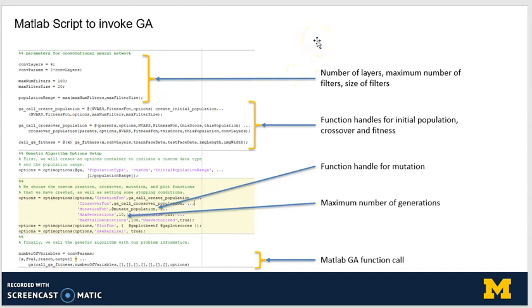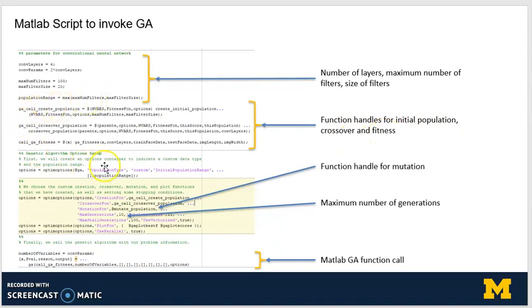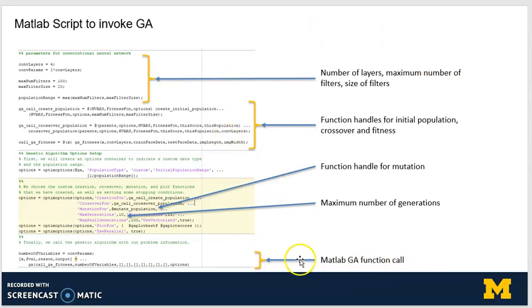Let's look into the MATLAB script used for invoking the GA. In the beginning, we set the different configuration parameters: convolutional layers as 4, maximum number of filters as 100, and maximum filter size as 20. Then we define the different function handles for creating the initial population, crossover, and fitness, as seen here. We also have a function handle for mutation. Then we have the maximum number of generations we allow the genetic algorithm to run — analogous to maximum epochs for a neural network. The population size is 11. Once all parameters and function handles are defined, we invoke the GA function.